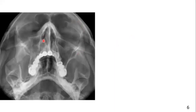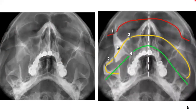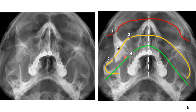Here is another occipitomental view. Again, if you follow the lines, it will be easy for you. Here are the three lines — one, two, and three. Recall your knowledge. A fourth line is not required because it is beyond the area of the zygomatic complex. These three lines are sufficient for the diagnosis of zygomatic complex fracture.